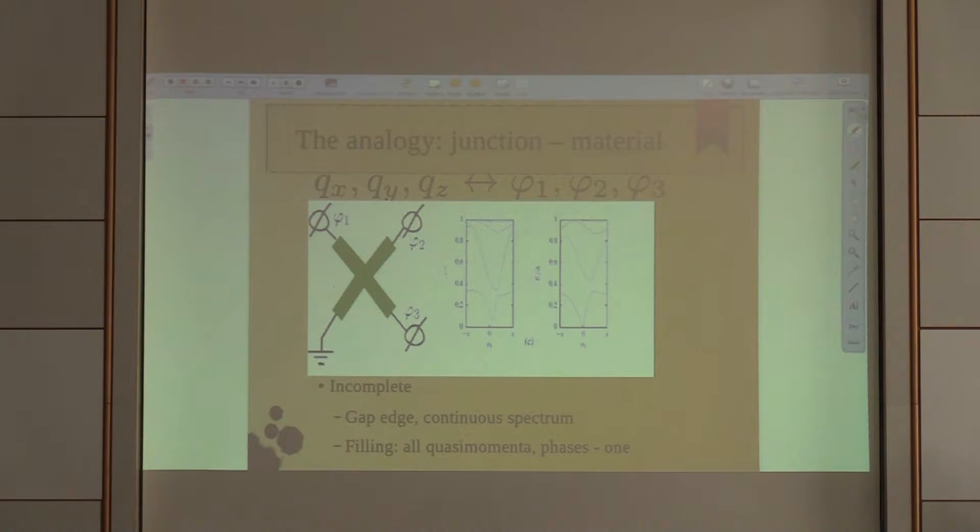If I take this structure with four terminals, of integer invariants, I can set one terminal to zero, so I have three independent phases and I can observe band structure of Andreev levels. These phases, superconducting phase differences, will play the role of quasi-momentum. I will have periodic band structure.